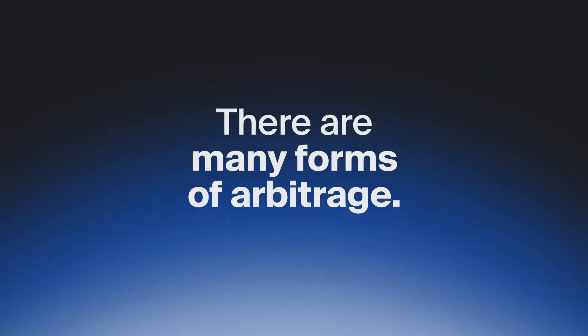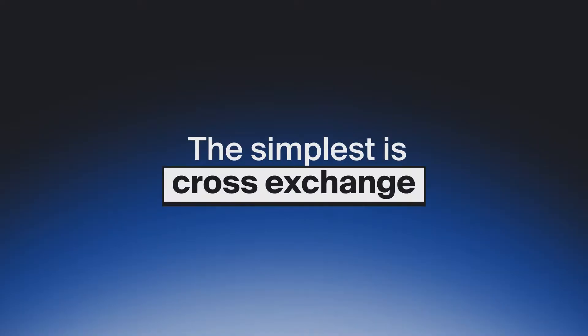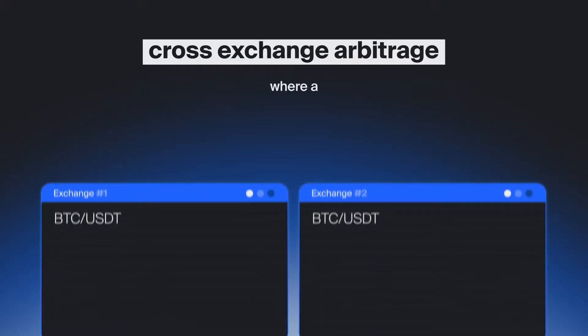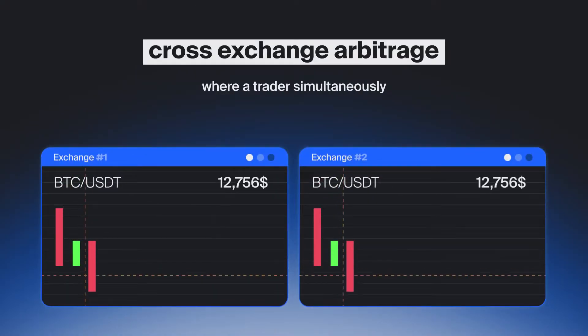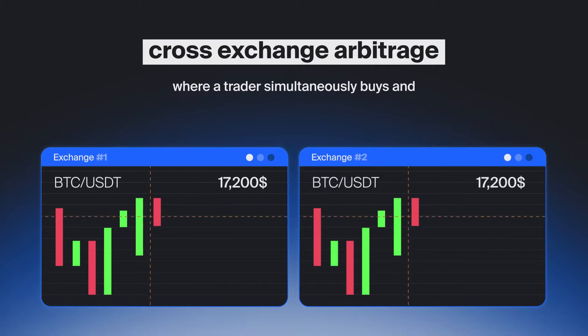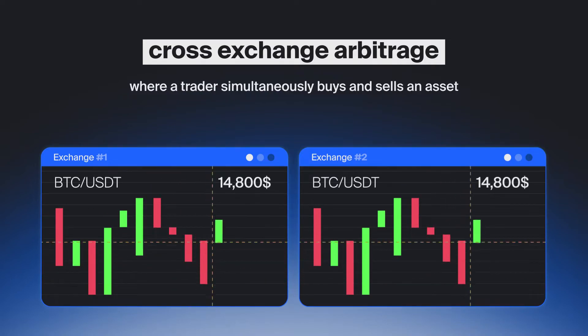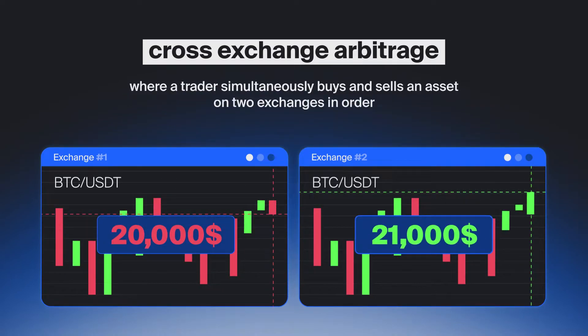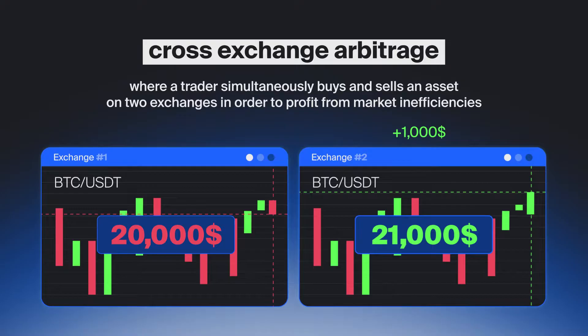There are many forms of arbitrage. The simplest is cross-exchange arbitrage, where a trader simultaneously buys and sells an asset on two exchanges in order to profit from market inefficiencies.